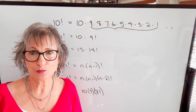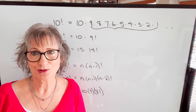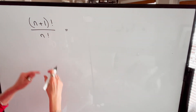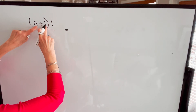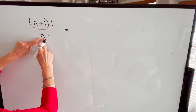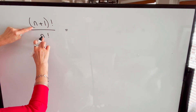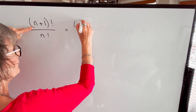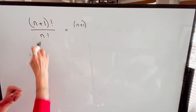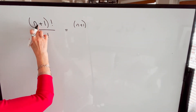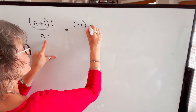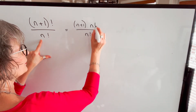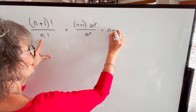You might be asked to simplify algebraic expressions involving factorials, so let's take a look at how we do those. If you were asked to simplify (n+1)! divided by n!, we take the highest factorial, which is n+1. We break it down: n+1 times the next lowest number, which is n+1 minus 1, equals n. So that gives us n factorial. We have n factorial in the denominator, so the n factorial cancels, and this simply equals n+1.